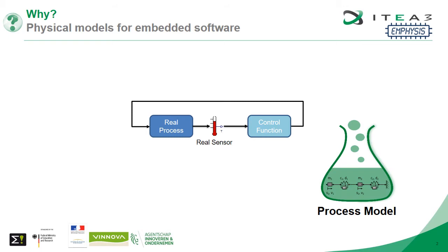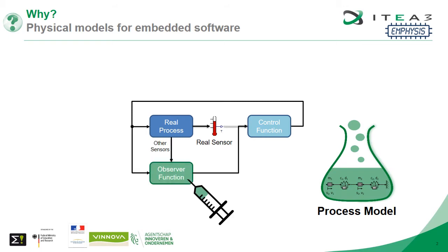Then it would be a great idea to use this knowledge to reduce the cost of your product by turning your process model into an observer function. This would allow you to get rid of the real sensor by replacing it with a virtual sensor.